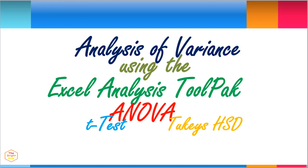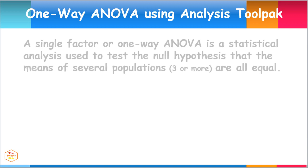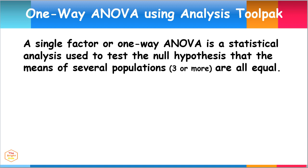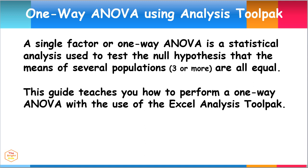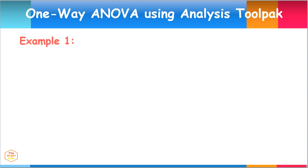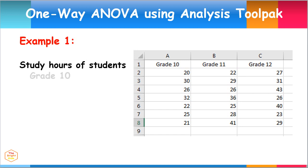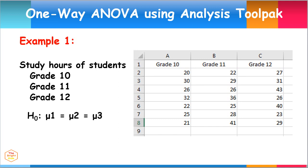This guide covers analysis of variance using the Microsoft Excel Analysis ToolPak. A single factor or one-way ANOVA is a statistical analysis used to test the null hypothesis that the means of several populations are all equal. For our specific example, we will use study hours of various students from Grade 10, Grade 11, and Grade 12. The null hypothesis states that the means of study hours are all equal, while the alternate hypothesis says that at least one of the means is different.